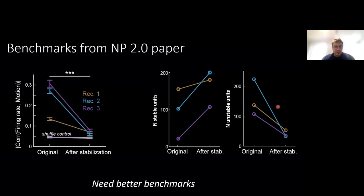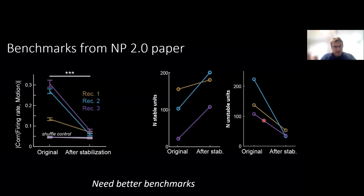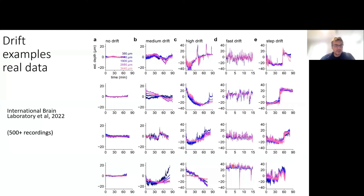We needed better benchmarks because we were benchmarking drift correction in a very specific case where Nick moved the electrode with pre-specified drift statistics, and we didn't have ground truth about what the actual units were doing. Making better ground truth has been a big problem in the field — it's been hard to make progress without it, and very hard to get it. But we thought we had an idea.